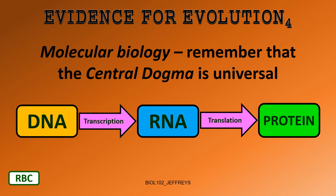From molecular biology, we have the central dogma — learned in Biology 101 — that DNA is transcribed into RNA and RNA is translated into protein. That process is the same across the board, whether you're a pine tree, an elephant, a human, a rattlesnake, or an amoeba. This process has not changed over millions and millions of evolutionary years. It has been retained, which tells us that all life is related at some point back in geologic and evolutionary time.